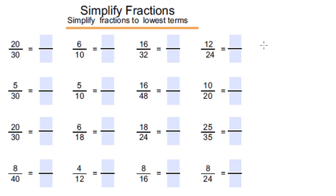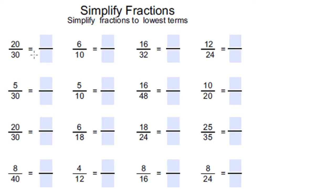We're going to simplify fractions to lowest terms — something very simple, for Year 3 students. The brightest Year 2 students should also be able to do it, but if you're in Year 3 and you cannot simplify these fractions, then you're behind your level. You can use the 10 times table to simplify this: 10 times 2 is 20, and 10 times 3 is 30. Both the numerator and denominator are multiples of 10, so 2 over 3 is the simplified form of 20 over 30.